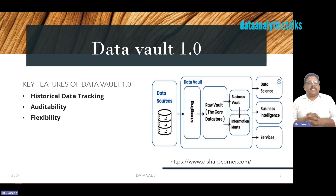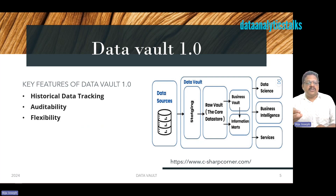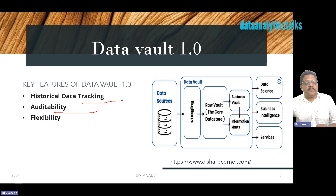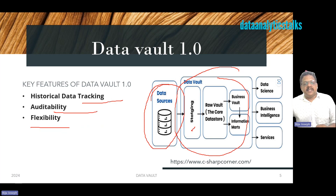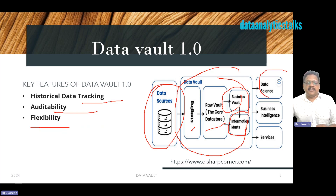It's important to note the different versions of Data Vault. There are two major versions: 1.0 and 2.0, with 2.0 being an extension of 1.0. Data Vault 1.0 features historical data tracking, auditability, and flexibility. Looking at the architecture diagram, data flows from various data sources into staging, then into the core data store, the business vault, and information marts — from which data science, business intelligence, and services consume the data.